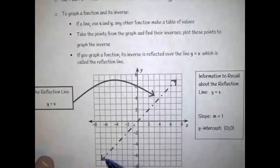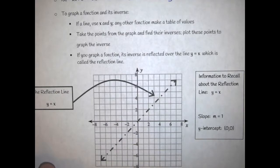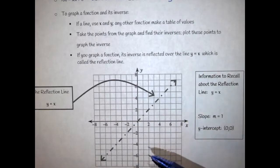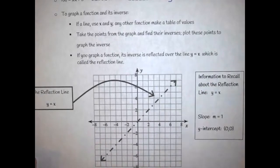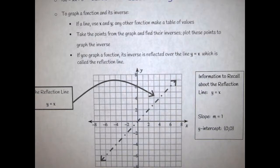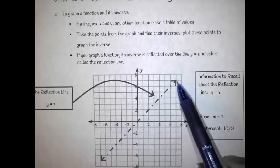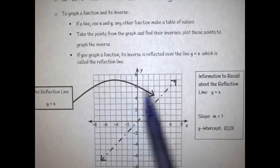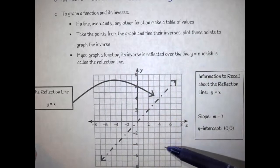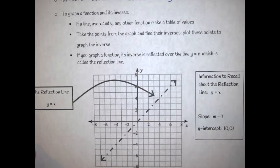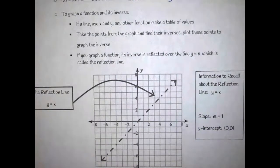A reflection line is the line that allows you to tell the difference between your original graph and your inverse graph. It is a reflection — similar to symmetry from Section 3.5, where you fold along the x-axis or y-axis to see if top matches bottom or left matches right. With inverses, you fold along the reflection line, and whatever is on the top has to mirror the bottom. This becomes important when graphing examples.